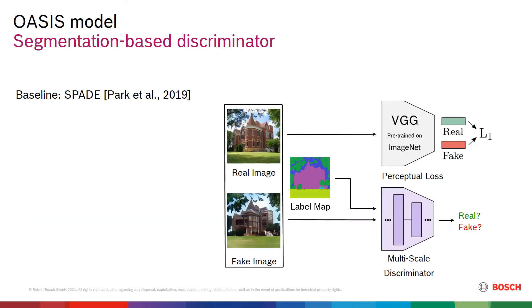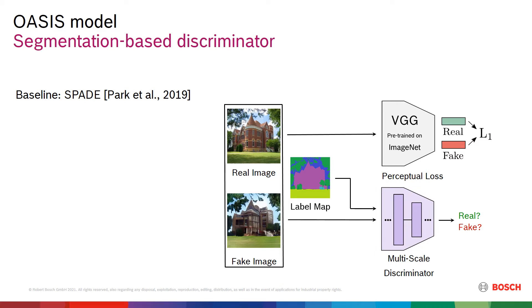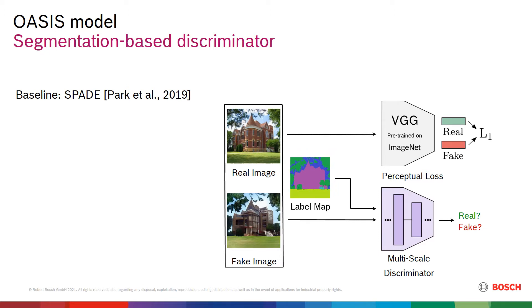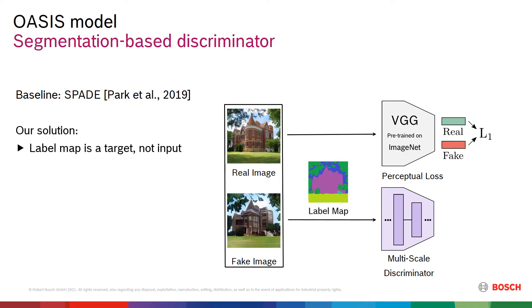Our model is based on the previous state-of-the-art model SPADE. SPADE uses multiple discriminator networks at different resolutions, as well as the VGG perceptual loss. Note that the label map is used as input to the discriminator. We find it inefficient, as the discriminator can ignore it and form its decision only on image realism. To incentivize the discriminator to learn semantically aware features, we propose using the label map as a target, not input.